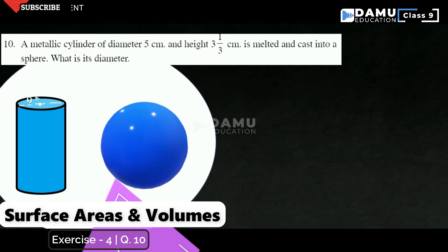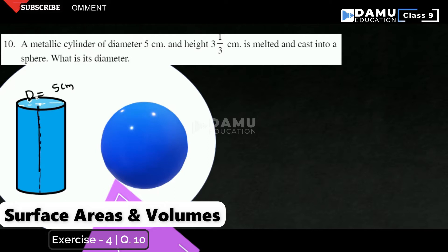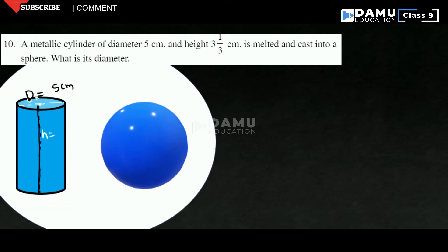The diameter they are given is 5 centimeters. For this, they are also given the height. This is the height — height is equal to 3 and 1/3 centimeters. So they are given the height and the diameter of the cylinder.